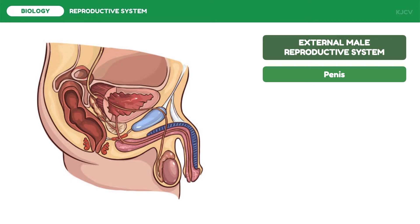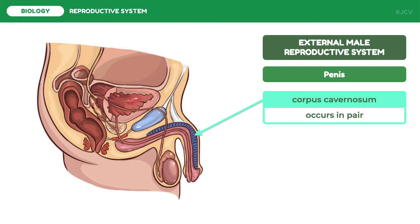During sexual arousal, nerve messages begin to stimulate the penis. Impulses from the brain and local nerves cause the pair of muscles called the corpora cavernosa to relax, allowing blood to flow in and fill the open spaces. The pressure makes the penis expand, creating an erection. Another important muscle of the penis is the corpus spongiosum.